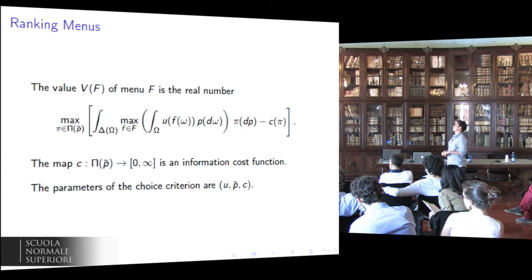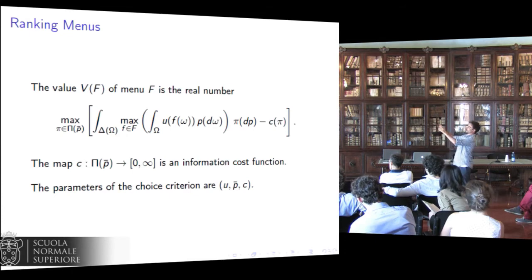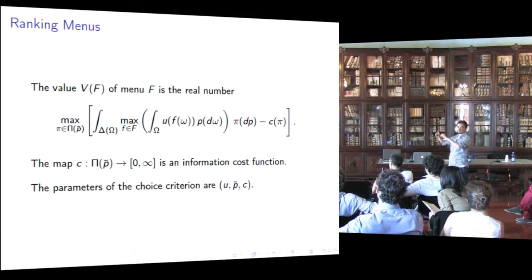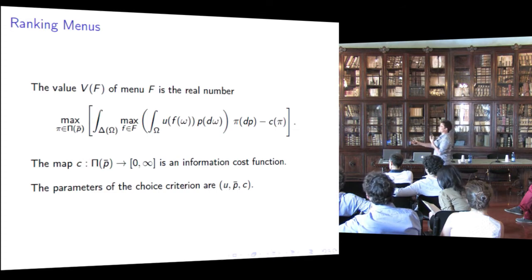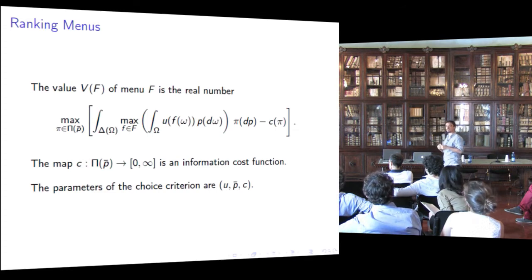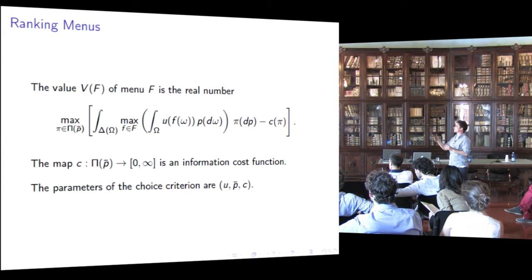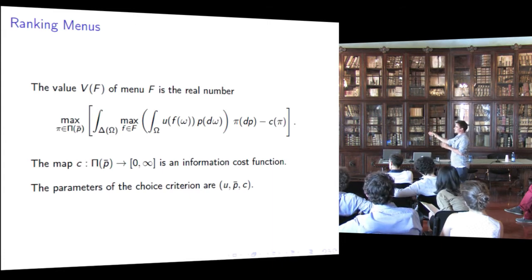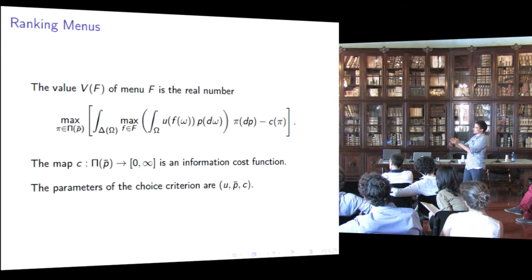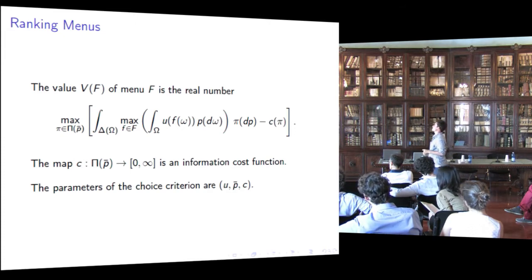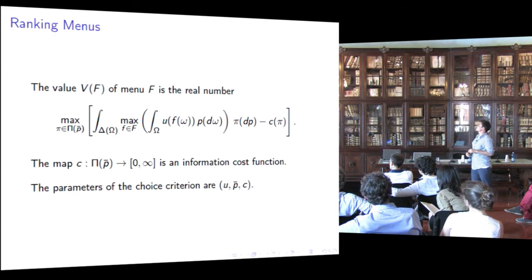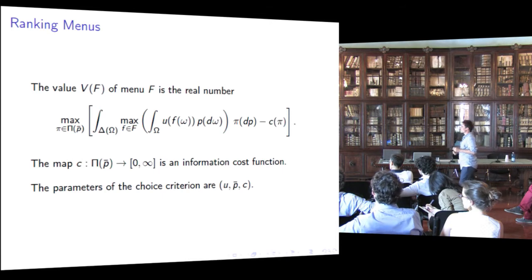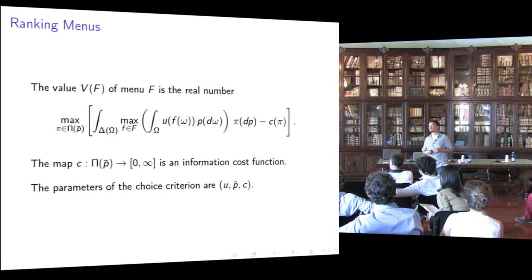Basically, the idea is that this value function, this way to rank menus, comes from the procedure that I just explained to you. You choose an act given a posterior, then you choose a channel, and you take expectation over all posteriors. The parameters of this choice criterion are the utility function U, the prior P bar, and the information cost function C.